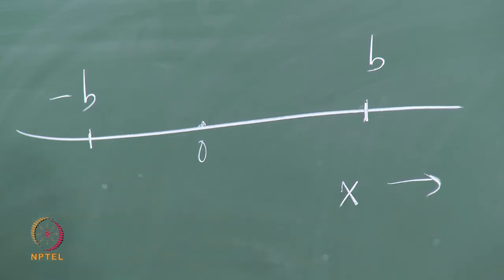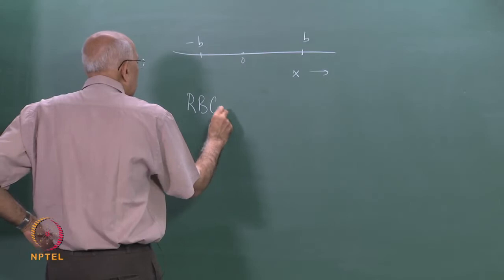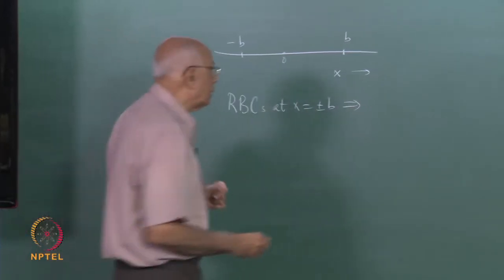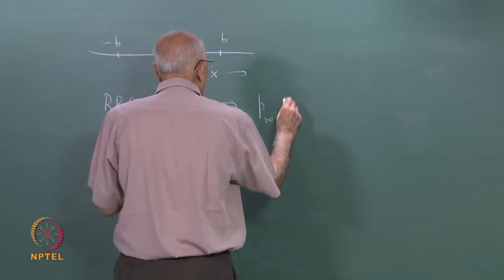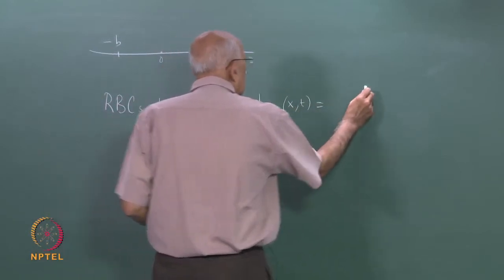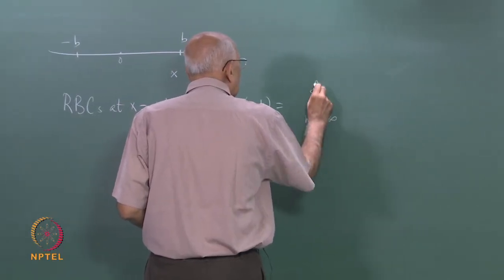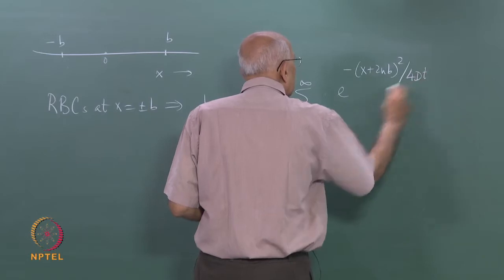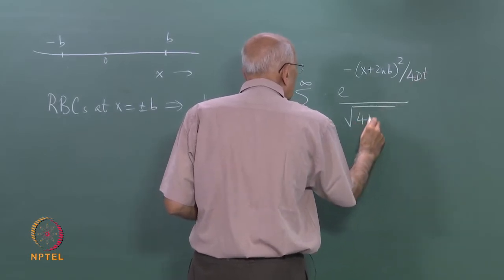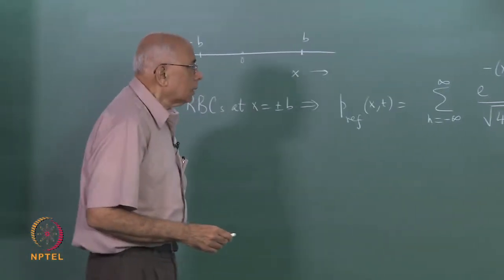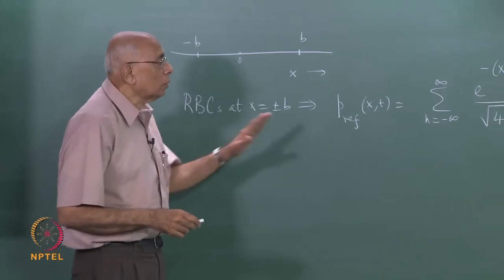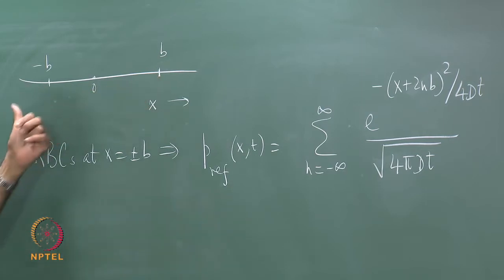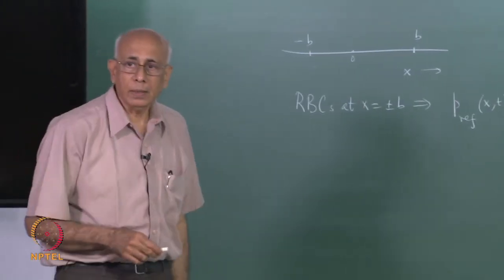If we have reflecting boundary conditions at x equal to plus or minus b, this implies that the solution p_reflecting of x,t is equal to a summation over all integers n from minus infinity to infinity of e to the minus (x + 2nb)² over 4Dt, divided by the normalization factor √(4πDt). This is the unique solution satisfying no flux across the boundary, so δp/δx vanishes identically at those two points.